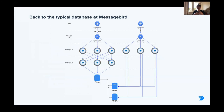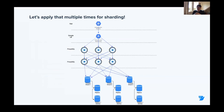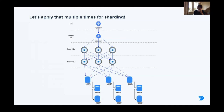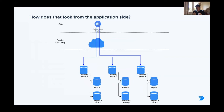Going back to the typical database at MessageBird — if we want to implement our sharding solution, we wanted to keep as much of the existing setup the same as possible. In our environment, we copy-pasted all existing ProxySQL rules for a cluster and then implemented them multiple times for each and every shard. The read-only connections are still present in the sharding environment as well. From the application side, it's like pointing to the Google load balancer using a specific account and just connecting to the correct shard.